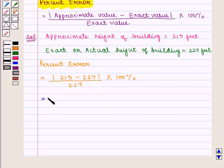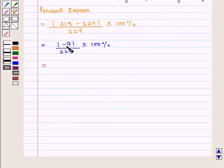This equals the modulus of 215 minus 224, which equals the modulus of minus 9 upon 224, times 100%, which equals 9 upon 224 times 100%.